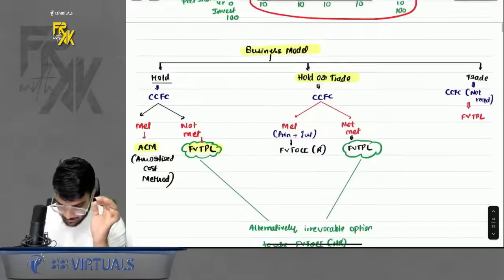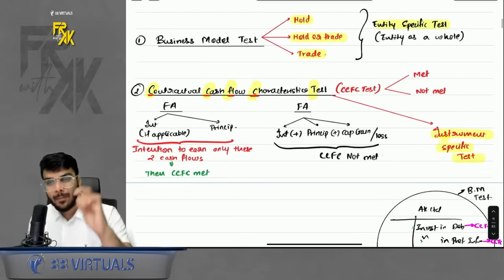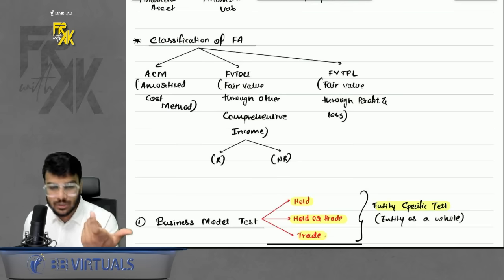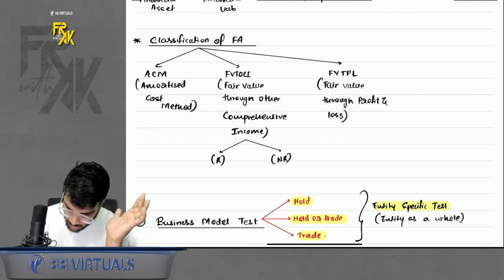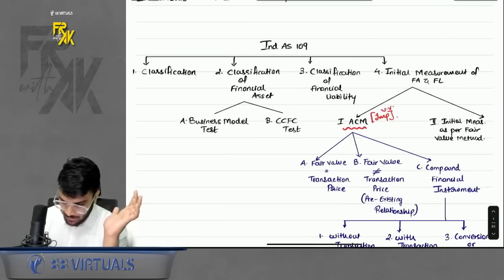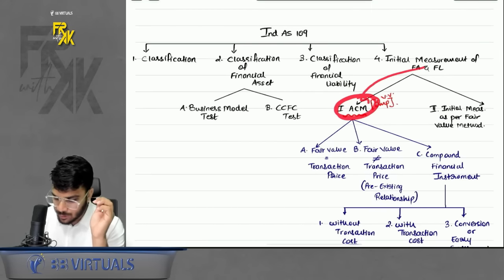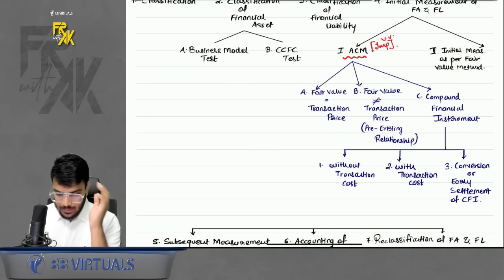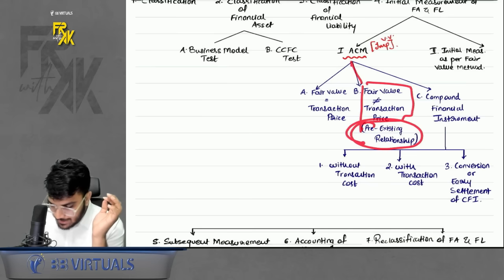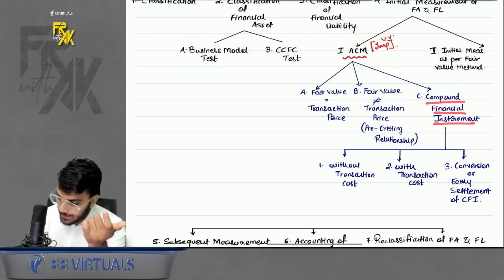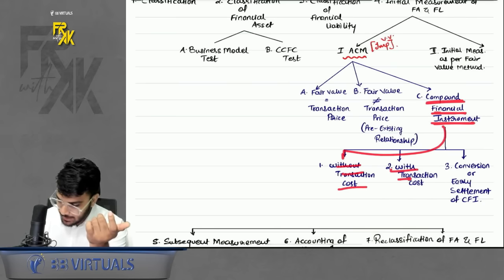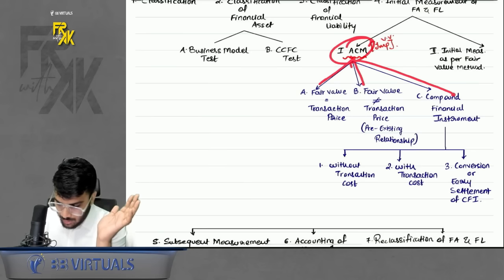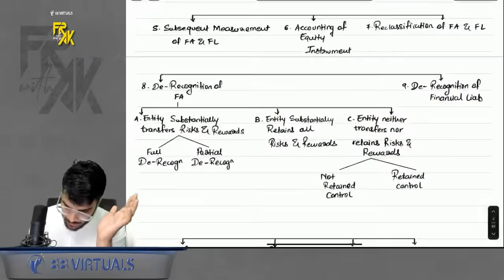Now let's discuss the ACM — amortized cost method — which is common for both financial assets and financial liabilities. Important note: under ACM, even though the name suggests cost, on day one every financial asset or liability is recorded at fair value. The name 'amortized cost' refers to how you keep it on your books subsequently — at amortized cost. The question is: how do we calculate the fair value?